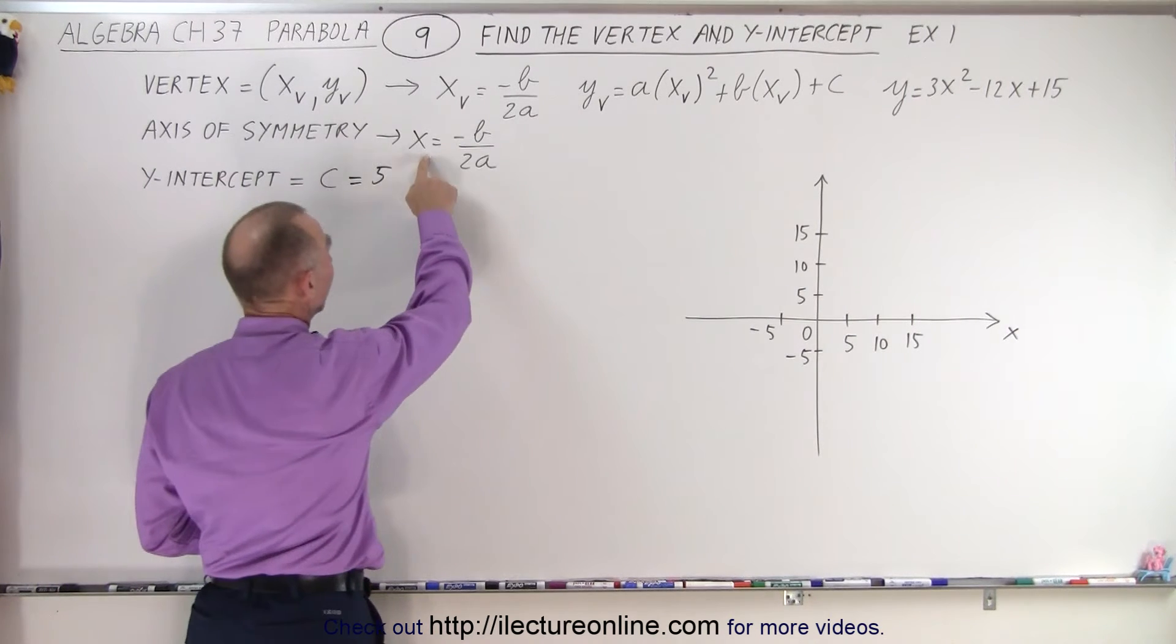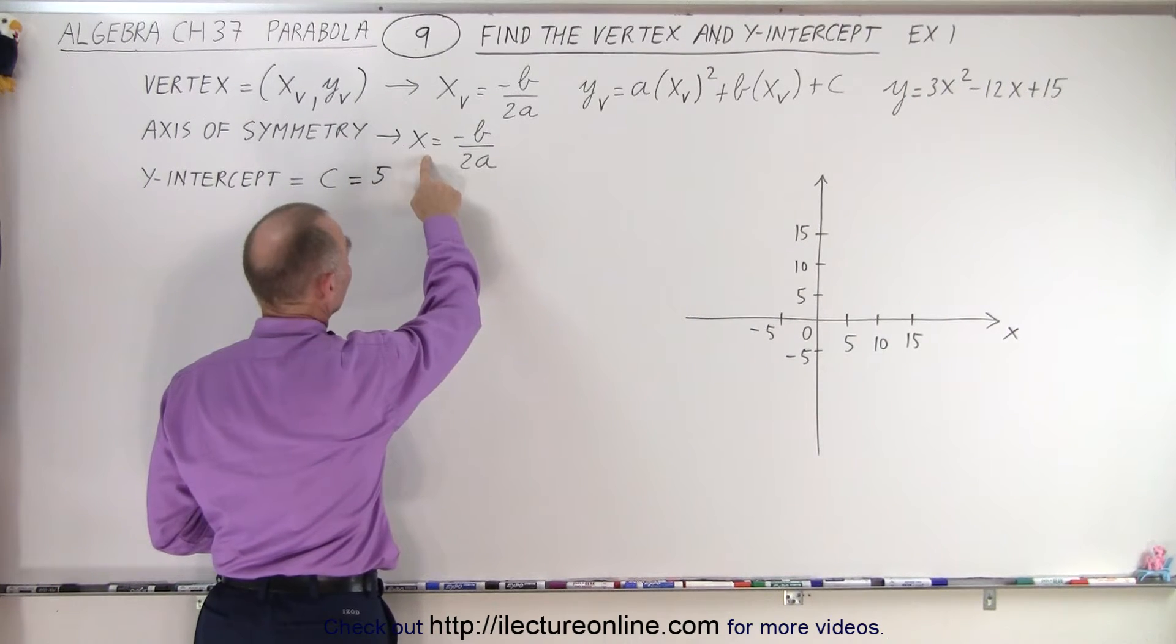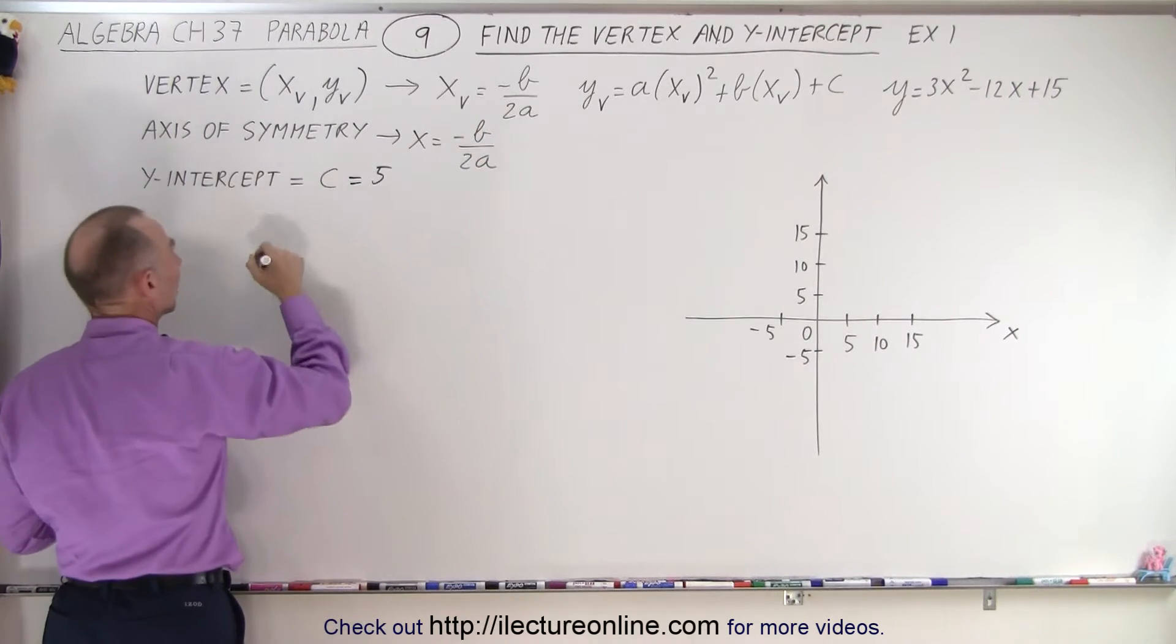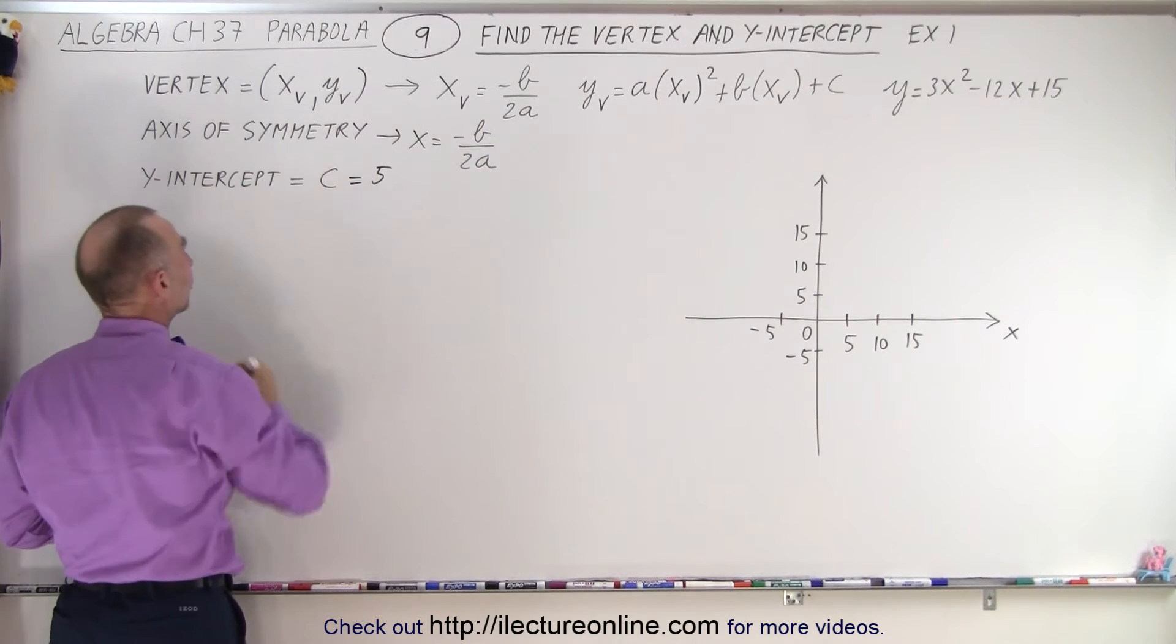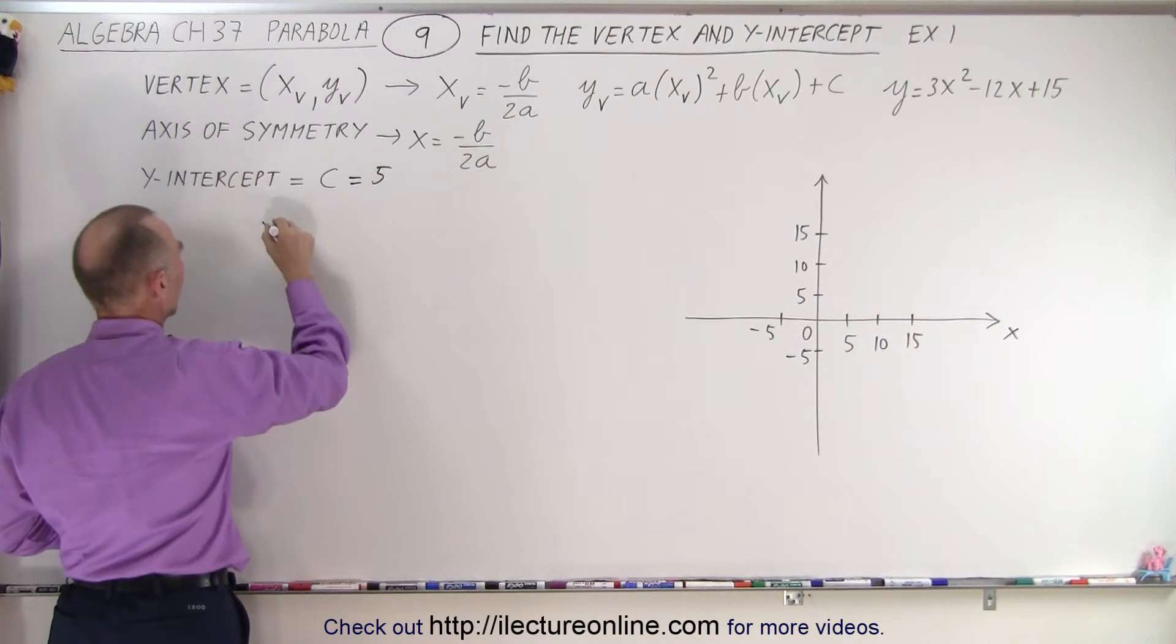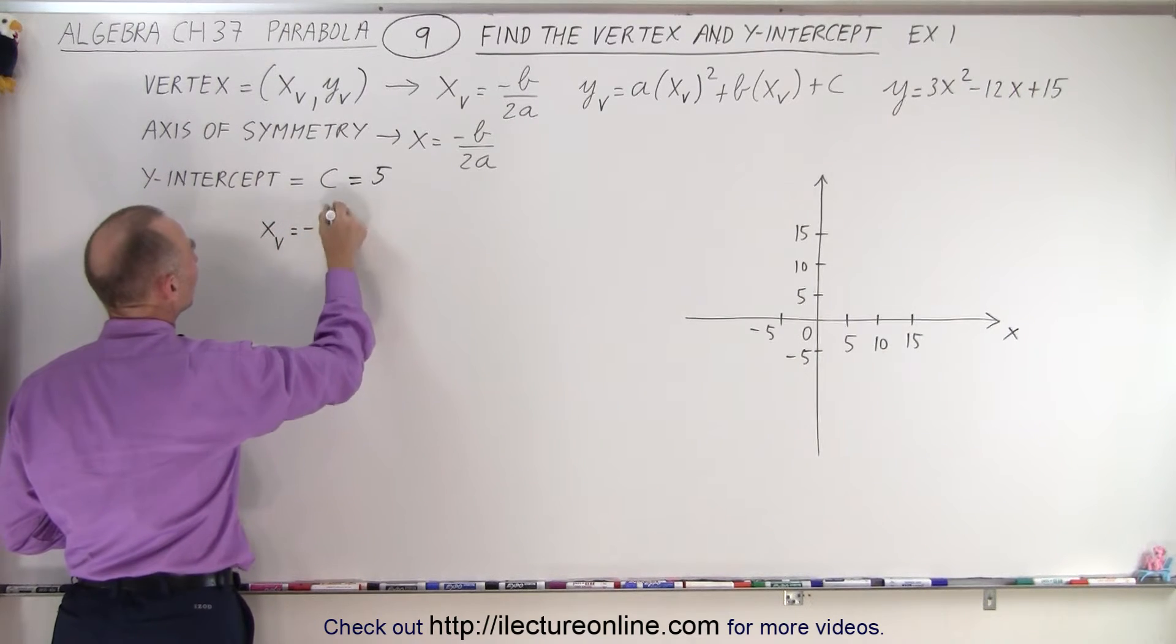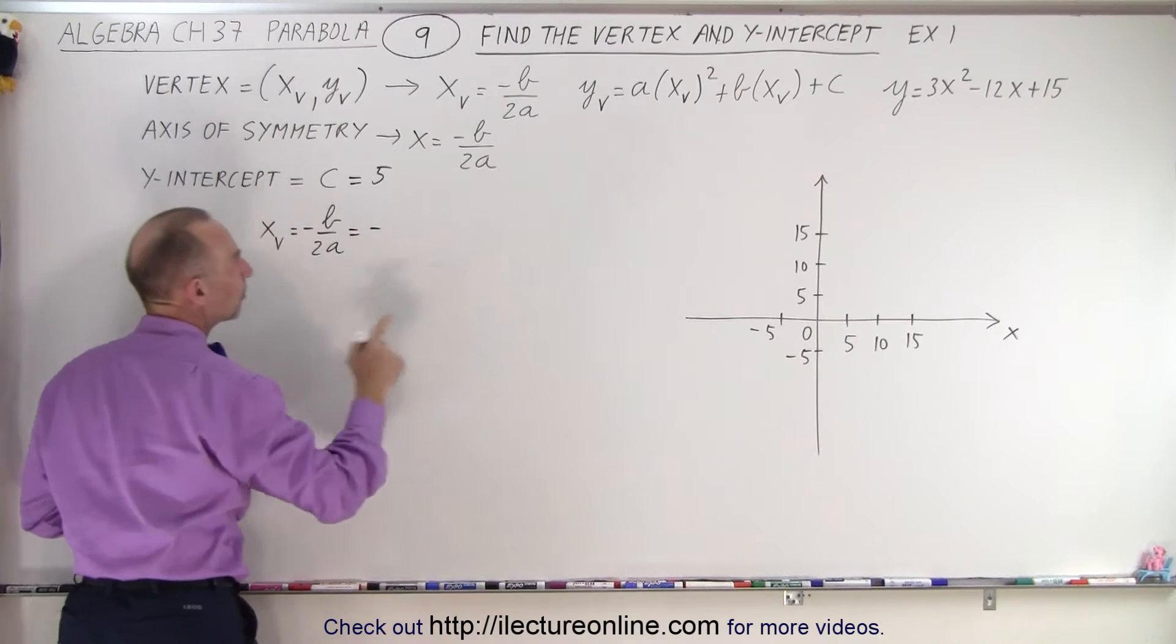We know that to find the x-coordinate of the vertex, we use x = -b/2a. That's also the equation for the axis of symmetry. So x_v = -b/2a, which equals minus b,